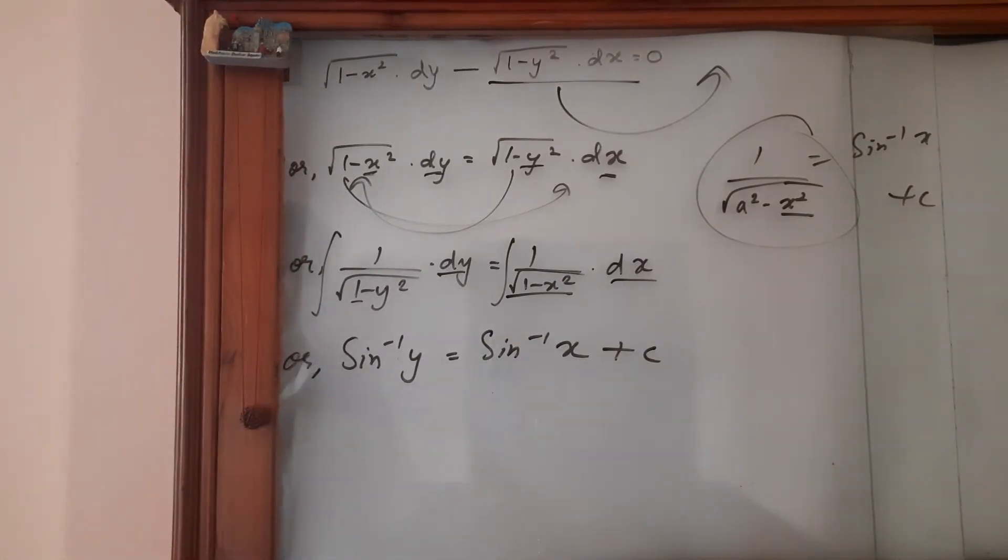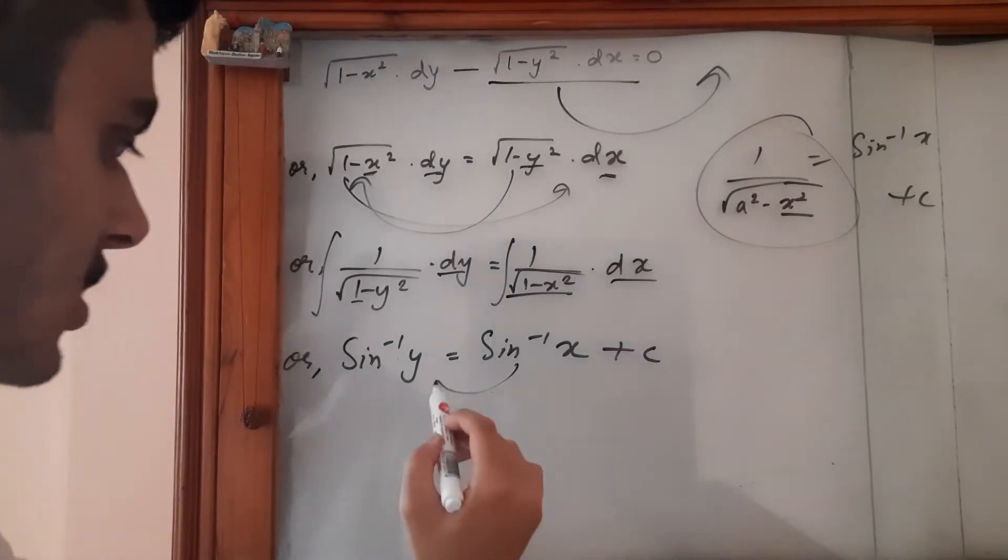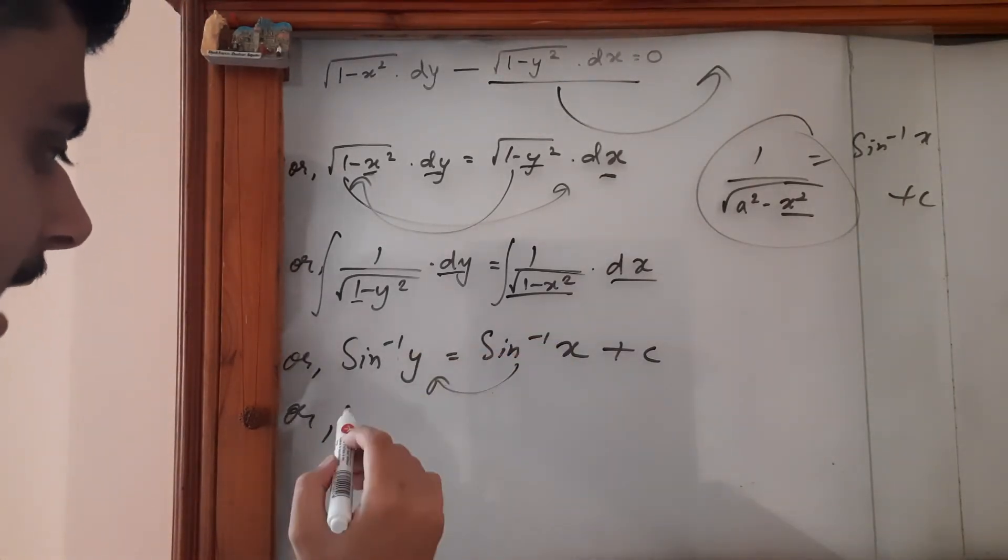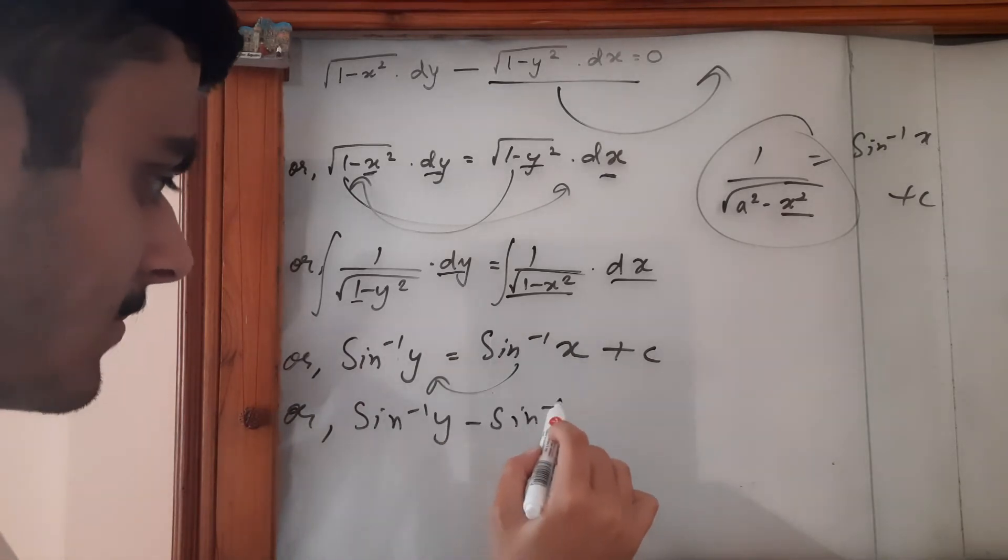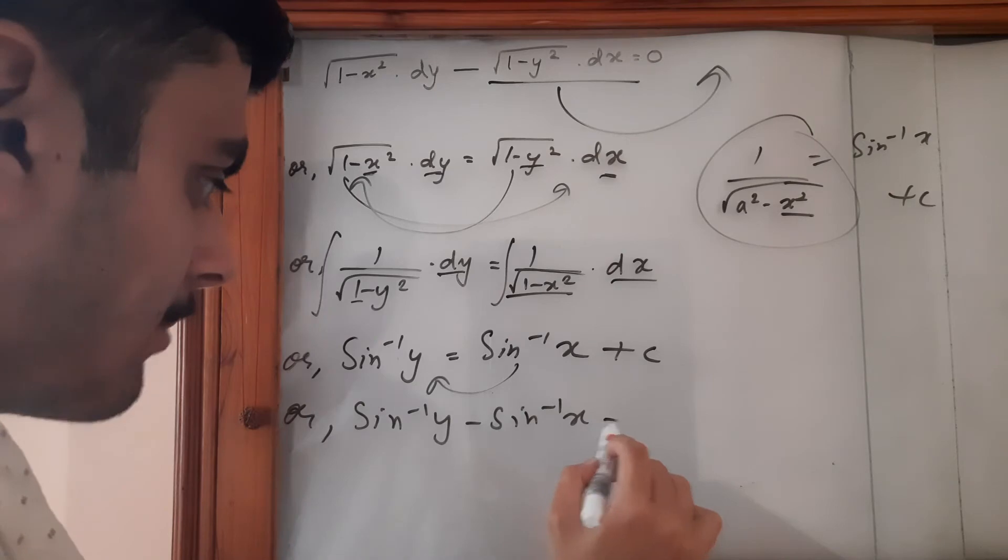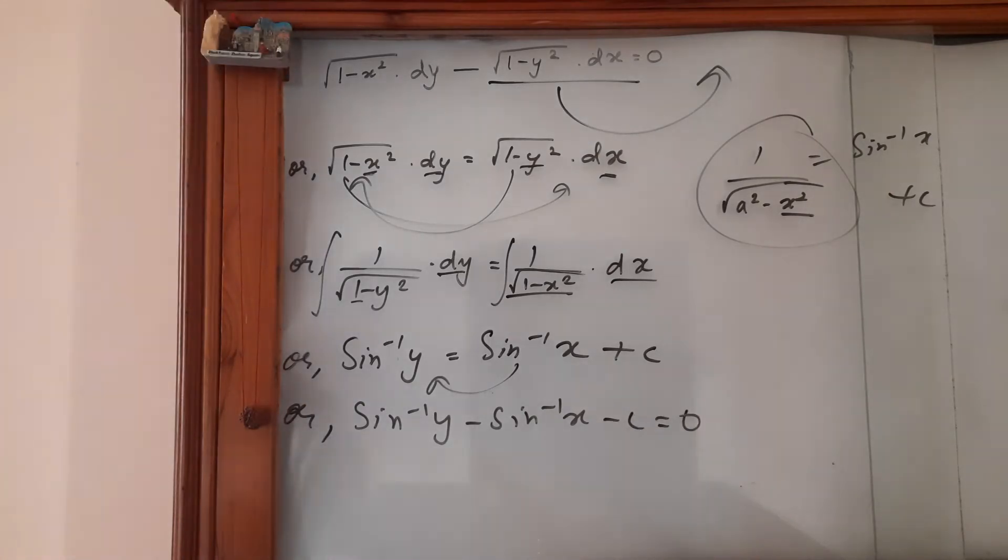And then now, simply what we can do is take this term to this side, or we can even take this to that side. I prefer to bring this side minus c, let's say it's not a big problem.